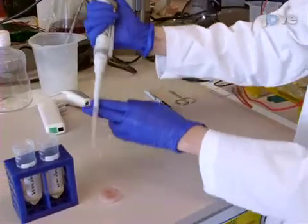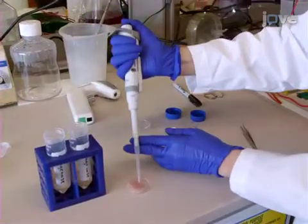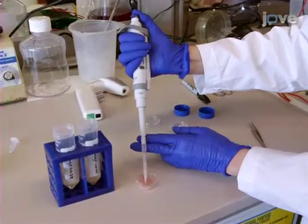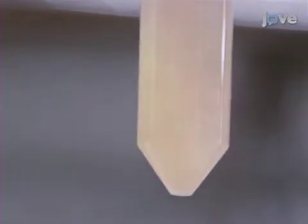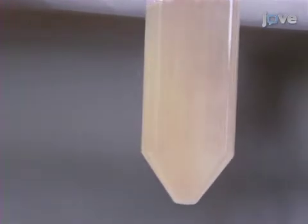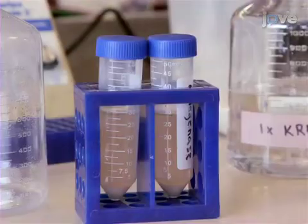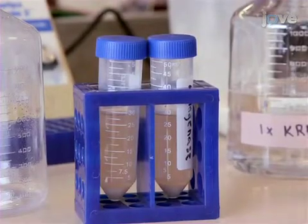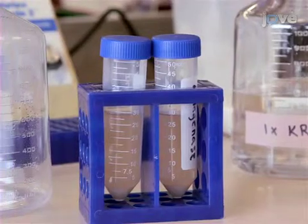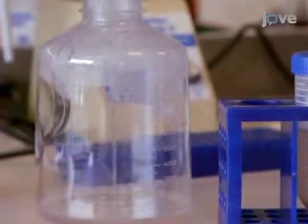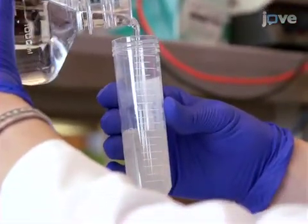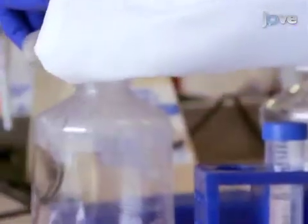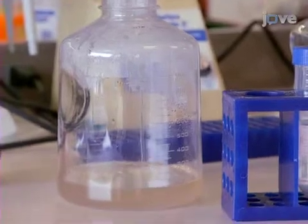Transfer 4 milliliters of Krebs containing the tubules to each conical tube containing 25 milliliters of collagenase solution. Shake at 33 degrees Celsius for 10 minutes until the tubules develop a spaghetti-like appearance. Next, allow the tubules to settle for 5 minutes to the bottom of the tube. Pour out the supernatant and wash twice with 25 milliliters of Krebs at room temperature, allowing the tubules to settle to the bottom of the tube each time. Leave approximately 5 milliliters of Krebs in each tube.